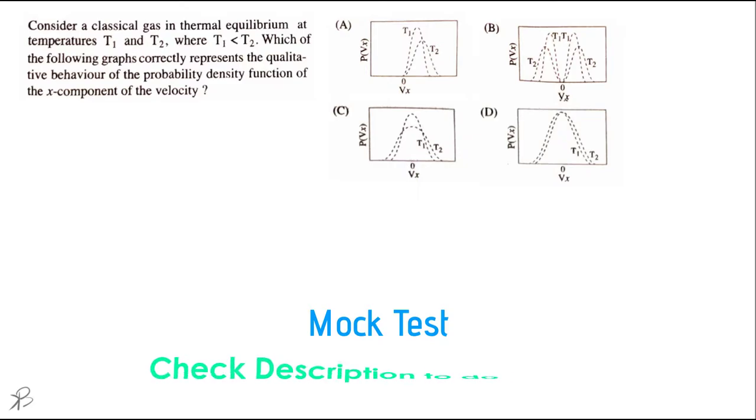Consider a classical gas in thermal equilibrium at temperature T1 and T2 where T1 is less than T2. Which of the following graph correctly represents the qualitative behavior of the probability density function of the x component of velocity?